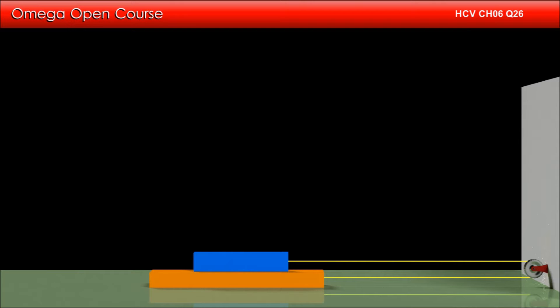Let us first draw the free body diagram of the block on the top. Gravitational force mg acts in vertically downward direction. Force F is pulling the block towards left. If we assume the tension in the string to be T, then tension T pulls the block towards right. Normal contact force from the lower block pushes it upward.